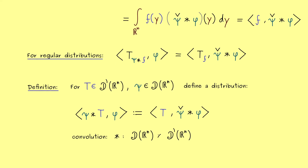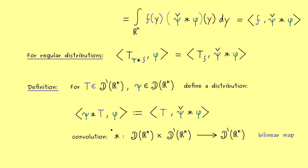Please note the input of the convolution is now a little different because only the second factor is a distribution, but what we get is a distribution again. It is not hard to see that this defines a bilinear map, so in some sense we can see the star operation as a multiplication. Now in contrast to the L1 case, we have an identity element in this multiplication — more concretely, the delta distribution acts like a 1. This is very interesting and helpful and something we will discuss in the next videos. I really hope we meet again — have a nice day, bye bye.